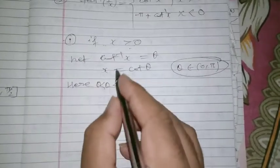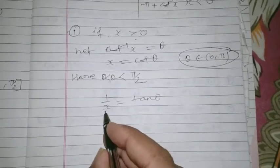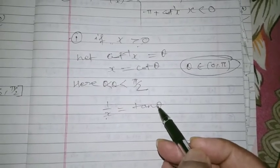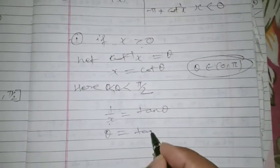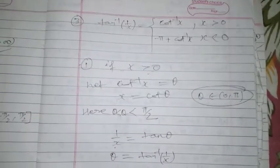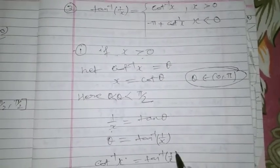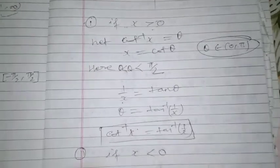Since x is not equal to 0, and θ lies between 0 and π/2, we know the restricted domain of tan is minus π/2 to plus π/2. So 0 to π/2 already lies within that interval. Therefore we can write: θ = tan⁻¹(1/x), since 1/x = 1/cot θ = tan θ. So cot⁻¹(x) = tan⁻¹(1/x) — this is the first case.